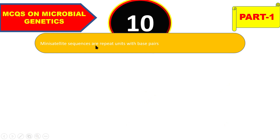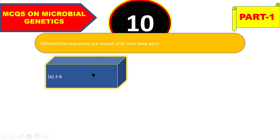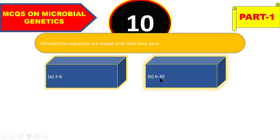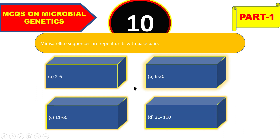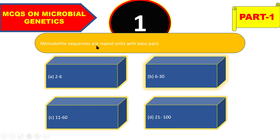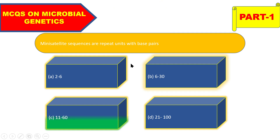Next question: mini-satellite sequences are repeat units with how many base pairs — 2 to 6, 6 to 30, 11 to 60, or 21 to 100 base pairs? The right answer for mini-satellite sequences is 11 to 60 base pairs.